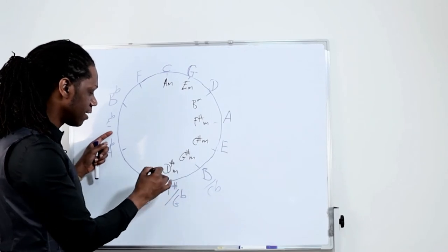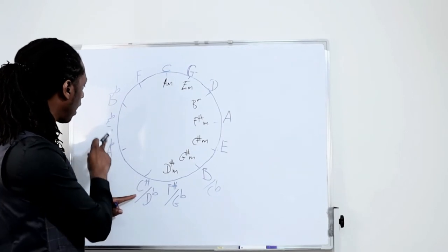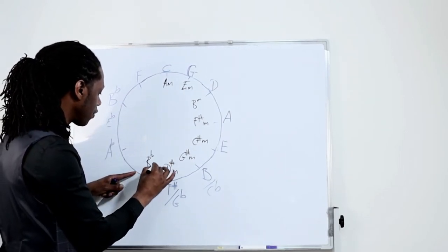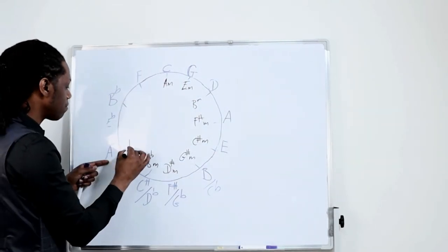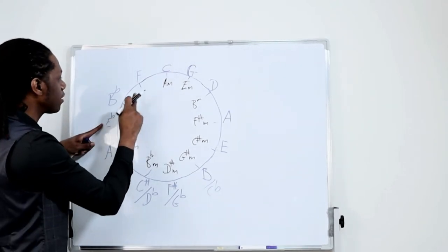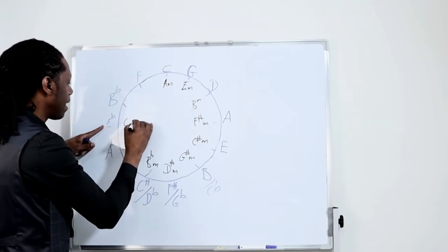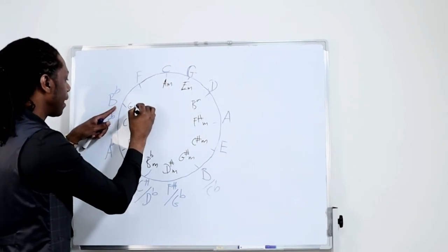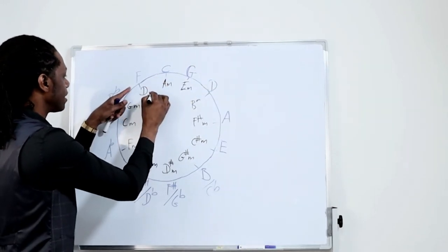Now going with flats instead of sharps: D flat, one, two, three — B flat minor. A flat, one, two, three — F minor. E flat, one, two, three — C minor. For B flat, we go F, C, and G — G minor. And for F, we go C, G, and D — D minor.